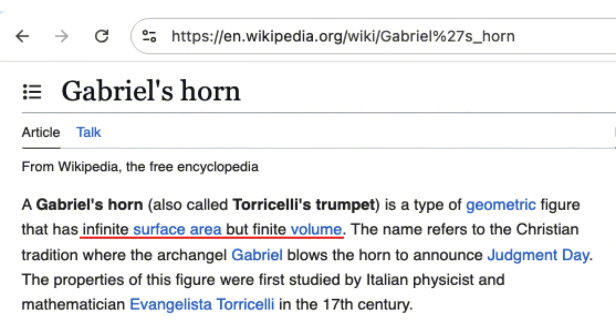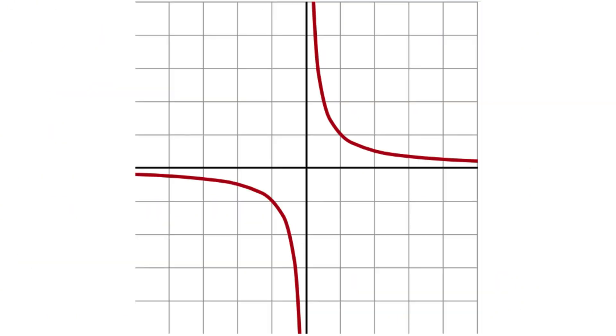This is Gabriel's horn, a mathematical object created by rotating the curve y equals 1 over x around the axis.